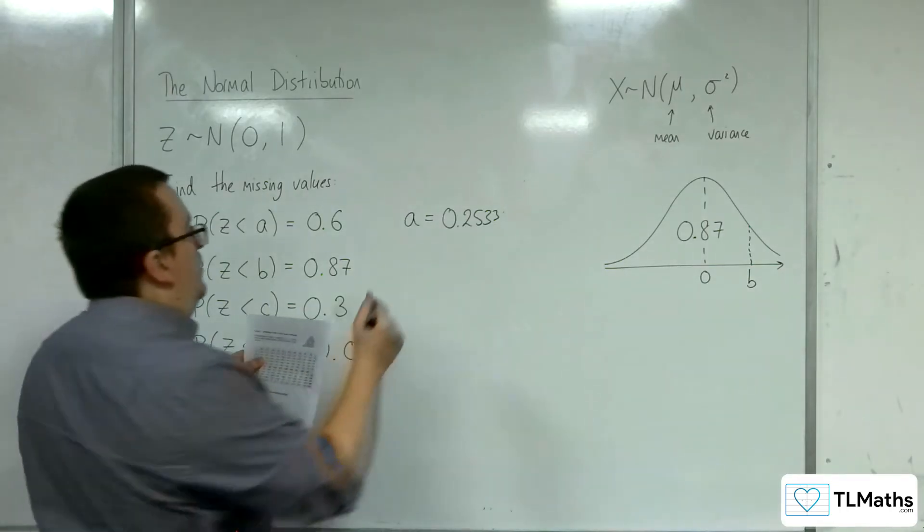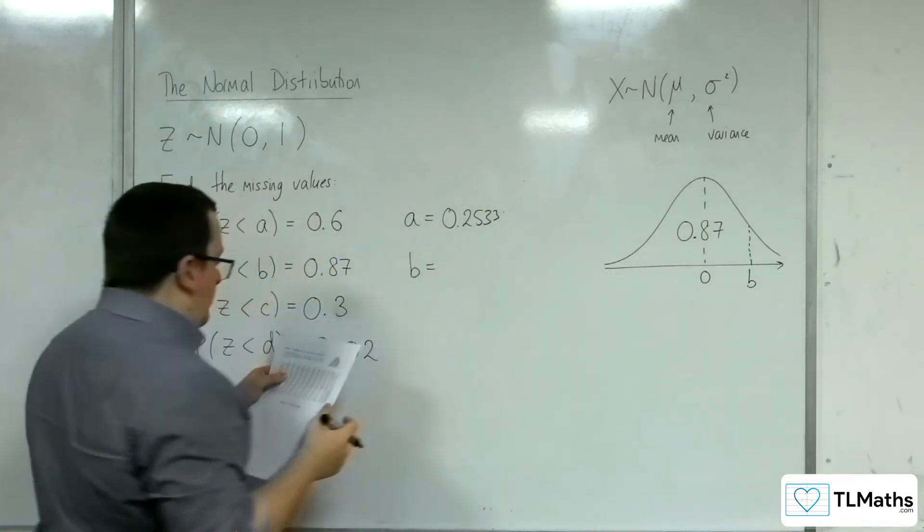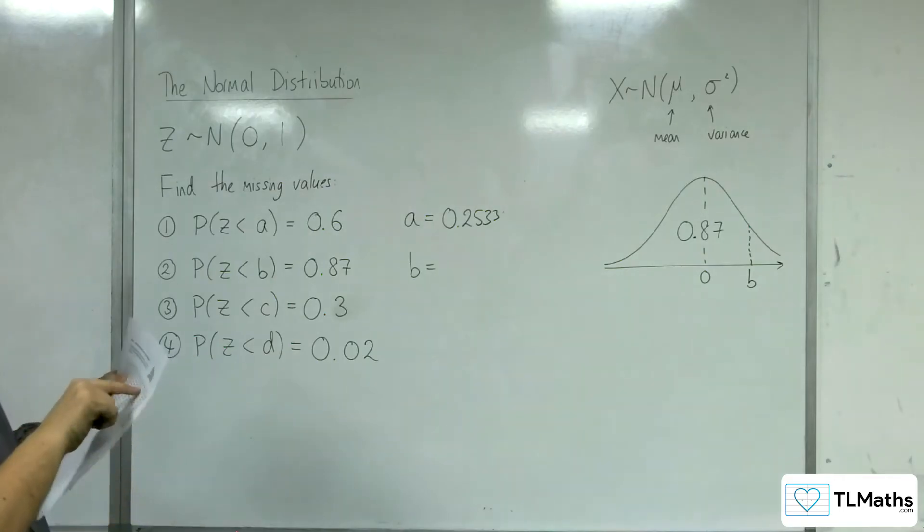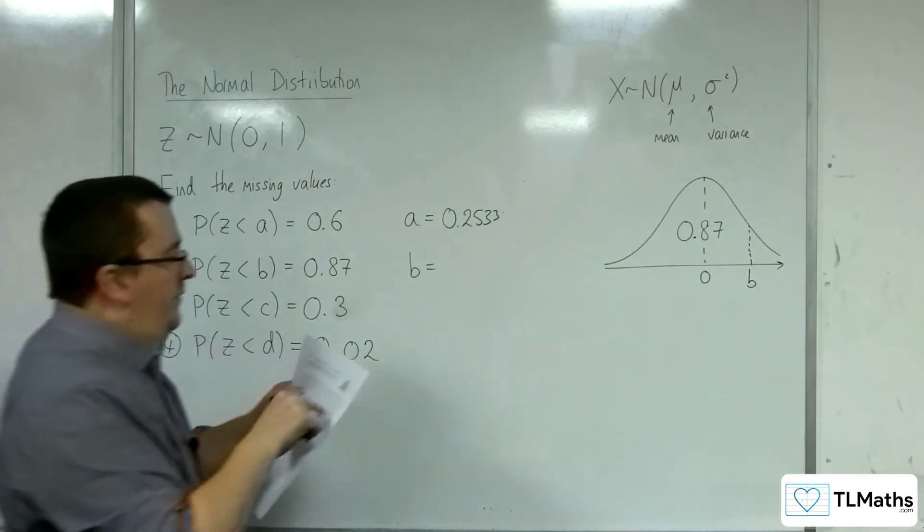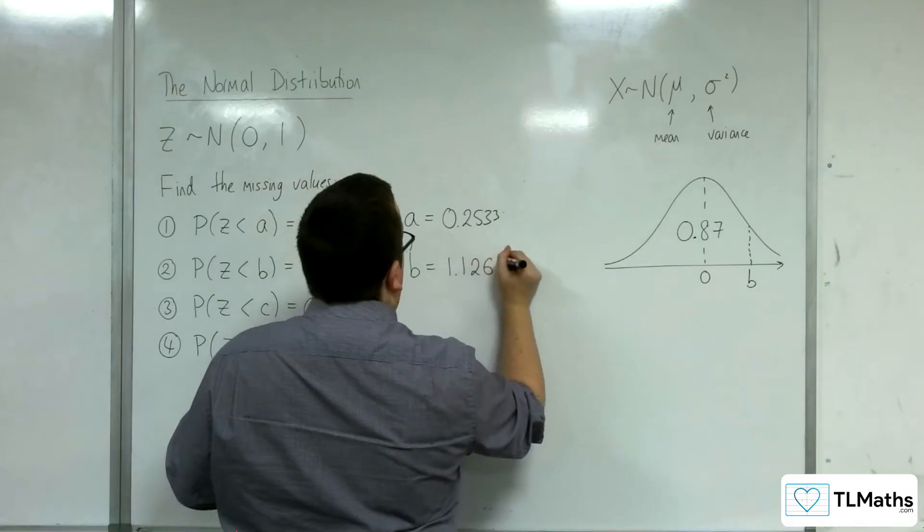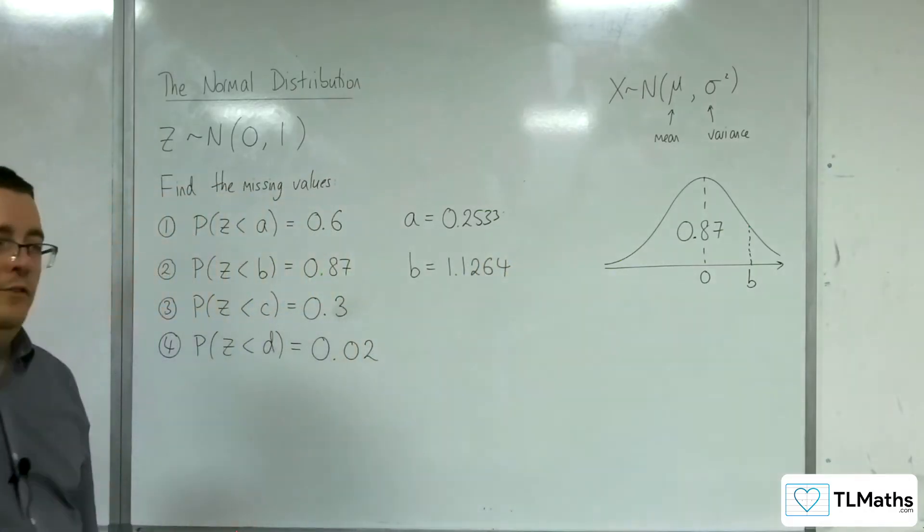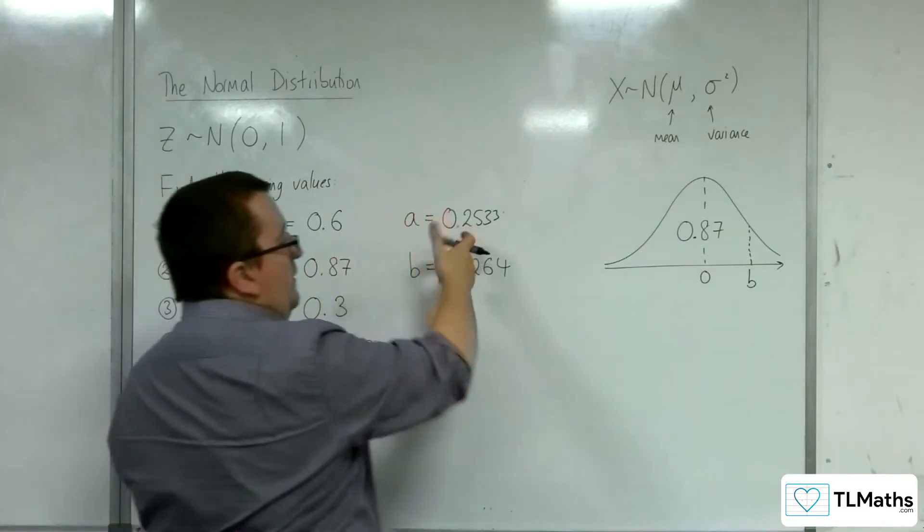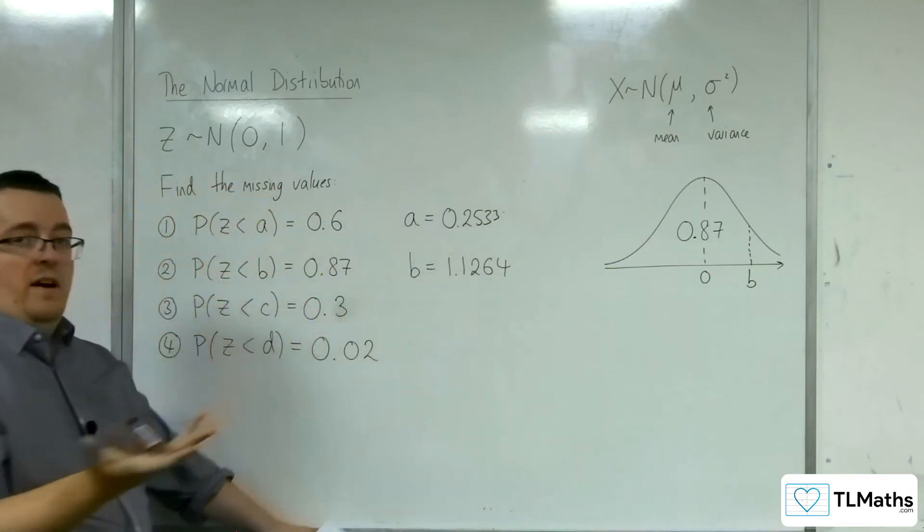So, I need to look up 0.87 in the tables. So, 0.8 and then 7 is 1.1264. And so, that is the value of B. So, it's further along than A, as we would expect, to give a higher probability.